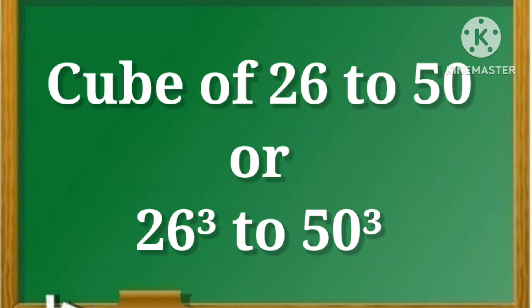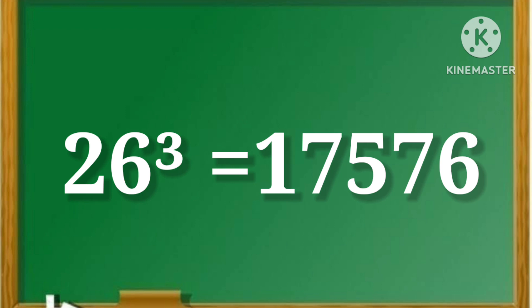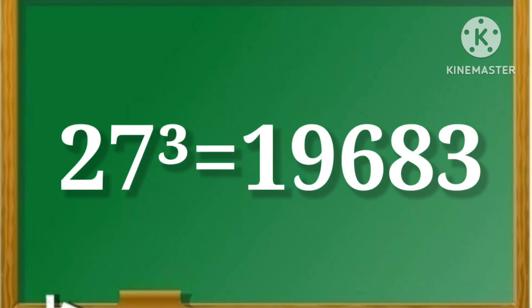So let's start. 26 cube is equal to 17,576. 27 cube is equal to 19,683.